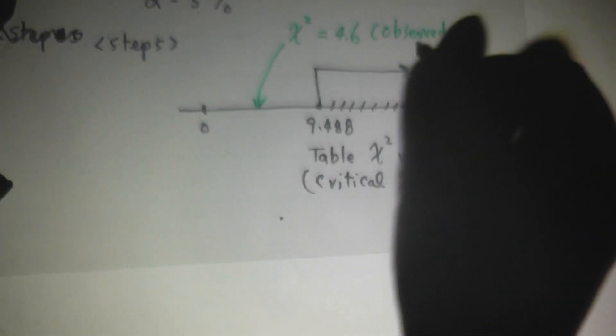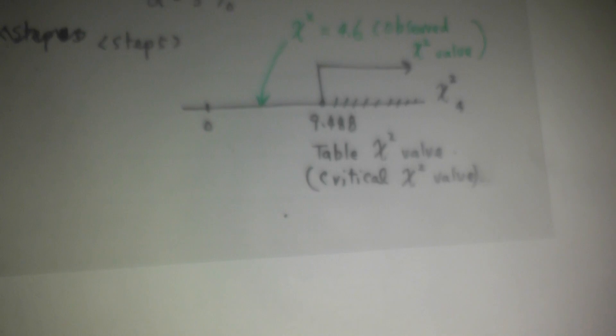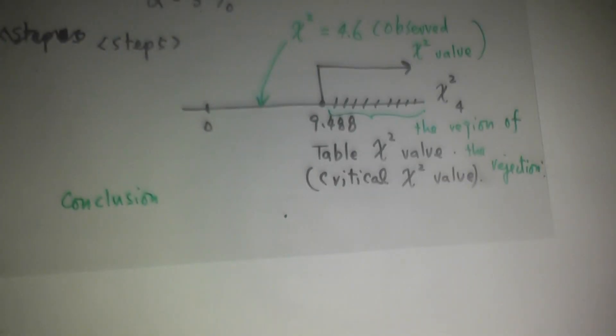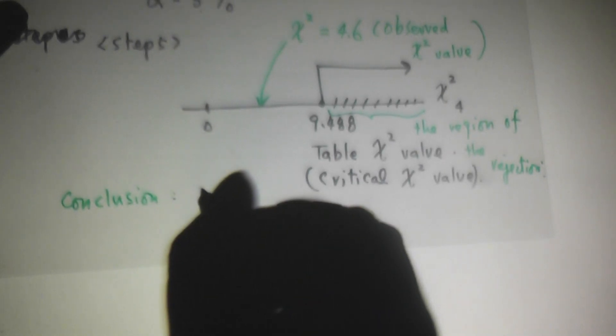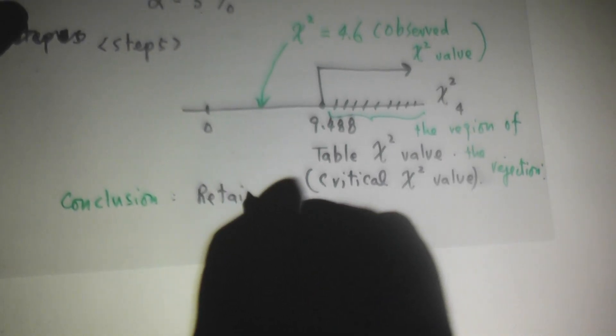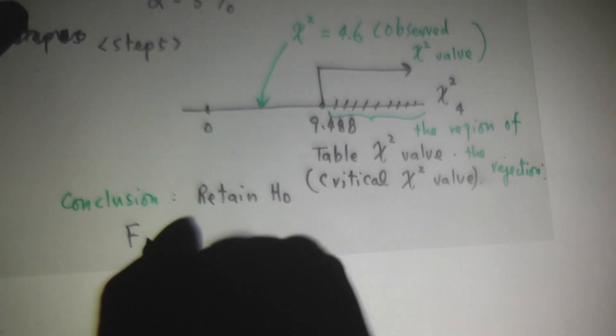This is called observed chi-squared value. Since observed chi-squared value is not in the region of rejection, this is what we call the region of rejection, our conclusion is we retain H0 or we fail to reject H0.